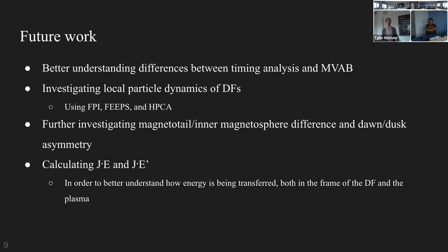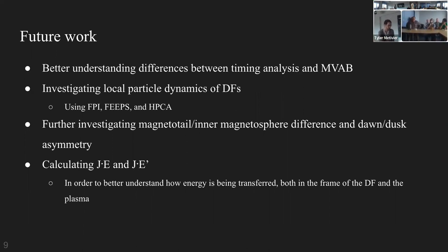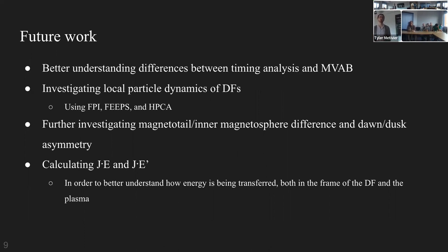Q&A: A question about whether differences in arrival directions between the two methods are random or systematic. We tried to scrutinize this by looking at whether a higher eigenvalue ratio between the second and third eigenvalues leads to better agreement — the answer is no, there's no correlation. We've kept trying to scrutinize further, and it could be physical differences. Events with an eigenvalue ratio below 5 are not considered in the MVA results.